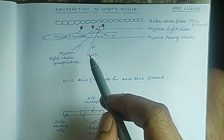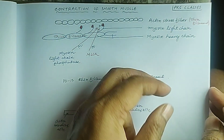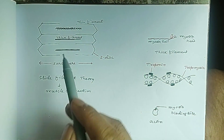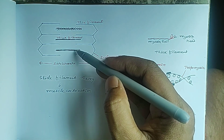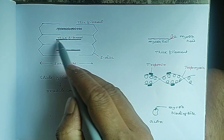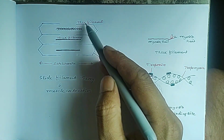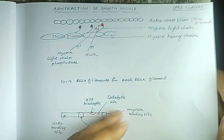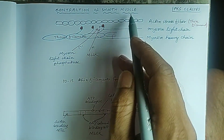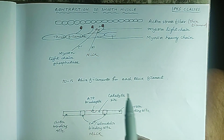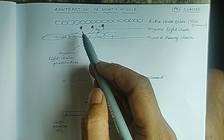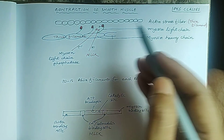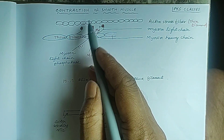This is different from skeletal muscle and cardiac muscle. In skeletal muscle and cardiac muscle, there is only one thick filament between two thin filaments. But in smooth muscle, the difference is that there are 10 to 15 thin filaments for each thick filament. When actin-myosin binding occurs — specifically between actin and the myosin light chain — contraction of the smooth muscle occurs.